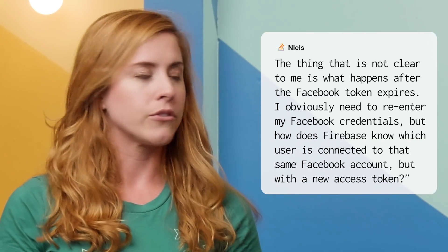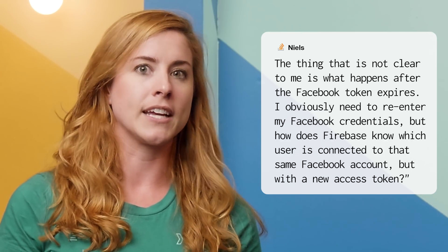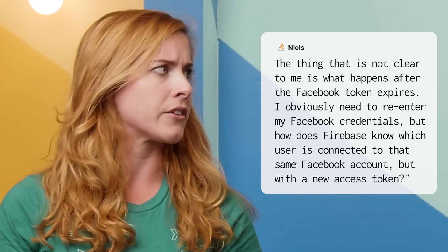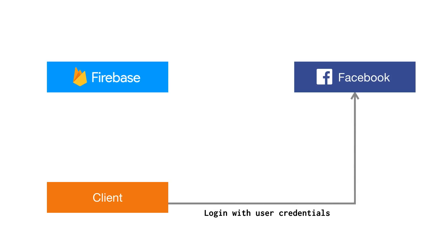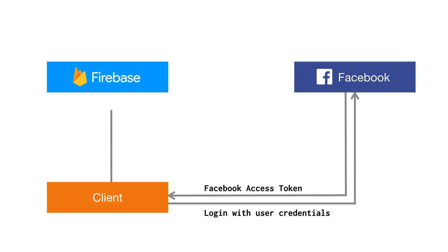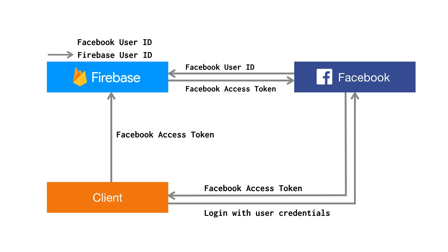Our next question comes from Niels, and they want to know what happens after a Facebook token expires. Obviously in that case you need to re-enter the Facebook credentials. But how does Firebase know which user is connected to that same Facebook account but with a new access token? So let me explain what happens in the background. First, you go to Facebook's SDK, the user puts in their credentials, logs in, and you get back a Facebook access token. Then you pass that token to Firebase, and Firebase on the back end pings Facebook to get some nominal user information about that token — in particular, Facebook's equivalent of a user ID. Later, when you sign into Facebook again with a new access token, it corresponds to the same user ID, so we can find in the mapping the same Firebase user.